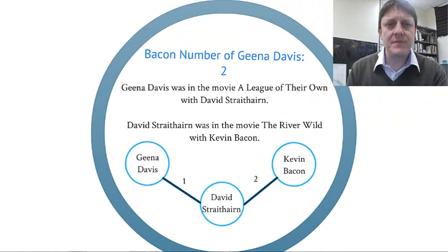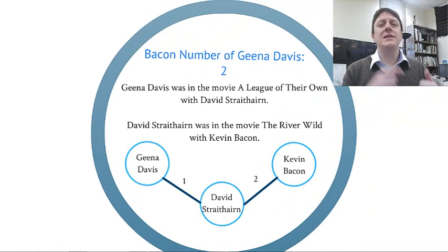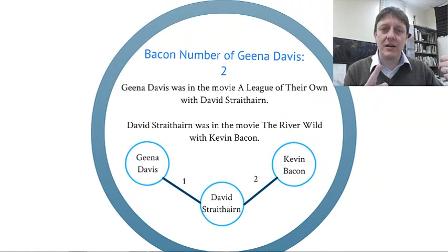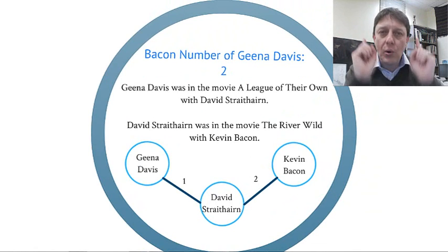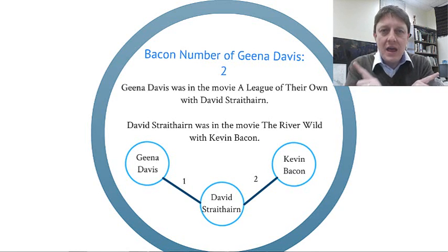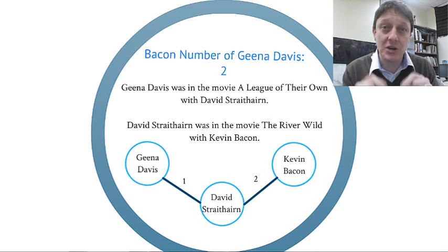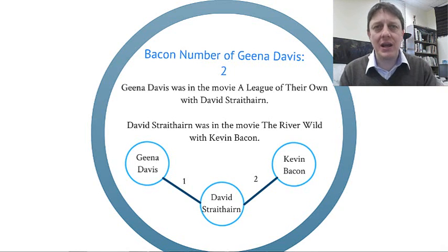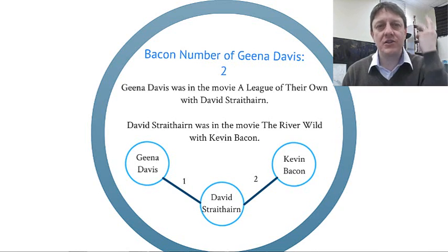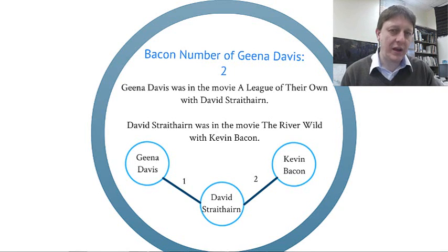Another example: Geena Davis has a Bacon number of two. She was in the movie A League of Their Own with David Strathairn. 'In a movie with' is a tie — a tie to David Strathairn. David Strathairn was in the movie The River Wild with Kevin Bacon. So that's two. And importantly, this is the geodesic distance, meaning it's the shortest available distance. Geena Davis has not been in a movie with Kevin Bacon, so the network distance of two is the shortest possible distance between them.